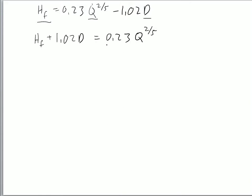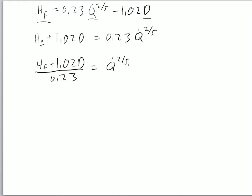Then we're going to divide by the coefficient in front of our Q dot — our heat release rate that we're interested in. So we'll have HF plus 1.02 times D divided by 0.23, which is equal to our heat release rate to the two-fifths power.